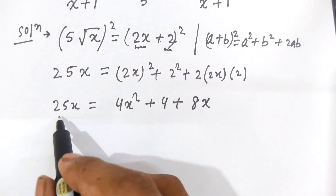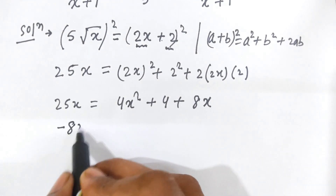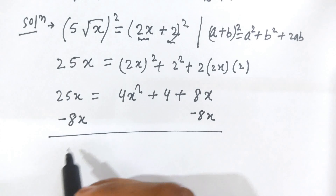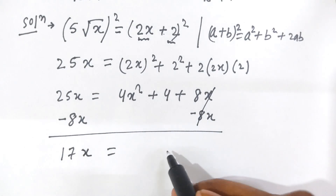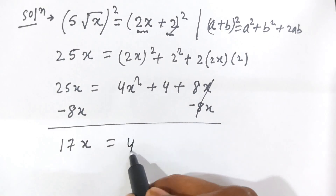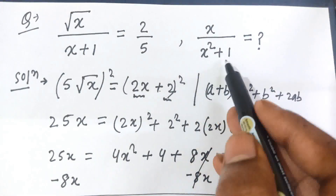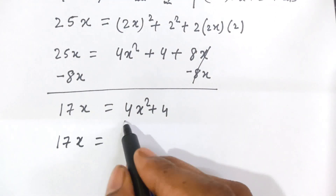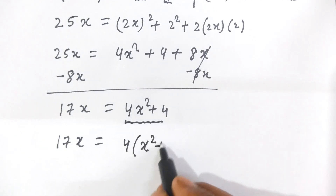Now, students, here we have 25x and here 8x, so if we subtract 8x from both sides, then on the left hand side 25x minus 8x that is 17x, and this is equal to 4x square plus 4, with plus 8x minus 8x cancelled out. So on the right hand side we have 4 times x square plus 4. And here we will find out the value of x divided by x square plus 1, so here 4 is common, then x square plus 1.